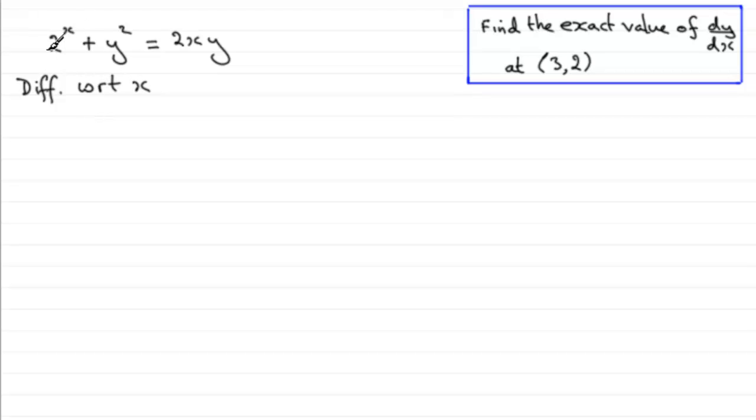Now when it comes to differentiating this first term with respect to x, 2 to the power of x, we should be familiar with this particular result. If you've got a constant, let's say y equals a constant a to the power of x, then dy/dx always equals a to the power of x multiplied by the natural log of that constant a.